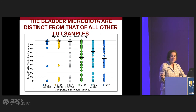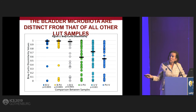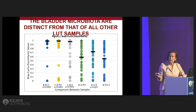This is the data for the other comparisons. Bladder and periurethral — again, very dissimilar. Bladder and voided specimen — very dissimilar. Urethra to periurethral — somewhat more similar. Urethra to voided — not as dissimilar. Bladder and periurethral to voided — neither of these are exactly similar. It suggests that these are distinct niches, but clearly the bladder and the voided urine are very distinct niches.